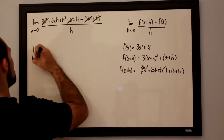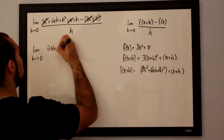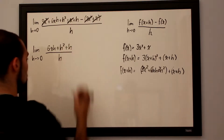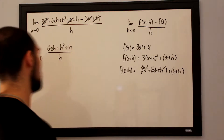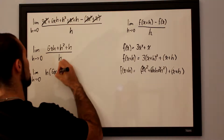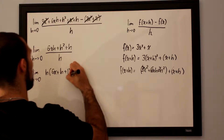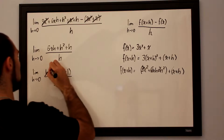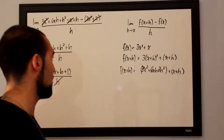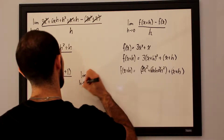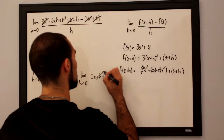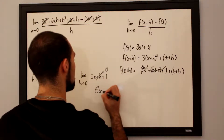All we're left with is the limit as h approaches 0 for 6xh plus h squared plus h, all over h. We can factor an h out of the numerator, giving us h times 6x plus h plus 1 over h. Cancelling the h in the numerator and denominator, we take the limit as h approaches 0 for 6x plus h plus 1. The h term disappears, so all we're left with is 6x plus 1.